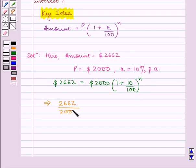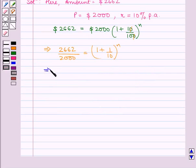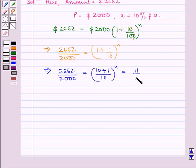2000 is equal to 1 plus 1 upon 10 raised to power n. Simplifying, 2662 upon 2000, which equals 1331 upon 1000, is equal to 11 upon 10 raised to power n.